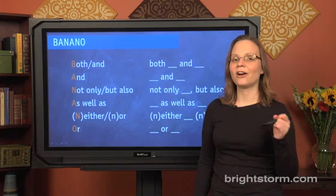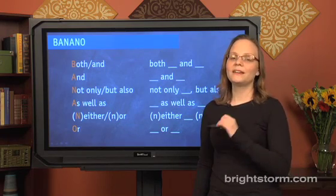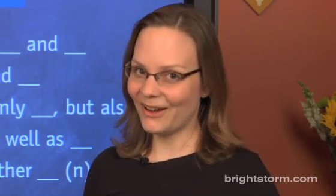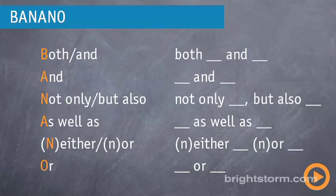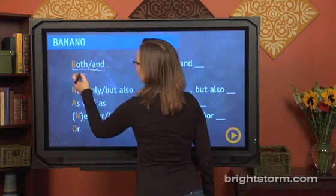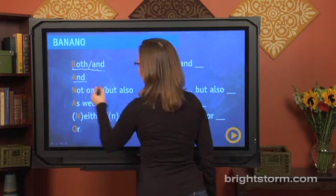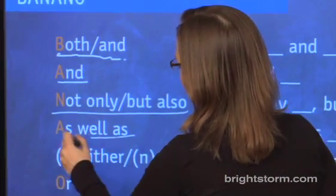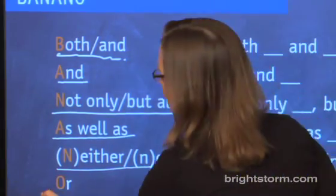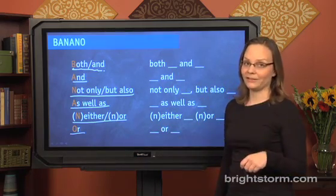In our initial example with healthy, wealthy, and wise, we were using parallelism because of the word 'and'. But it's not just 'and' that requires parallelism — there are other words too that indicate you need to make sure parallelism is being used. On the minus side, there are a lot of them. On the plus side, they almost spell banana — they spell banana. So if you see 'both and', 'and', 'not only but also', 'as well as', 'either or', 'neither nor', or 'or', that means you're going to need to check for parallelism.